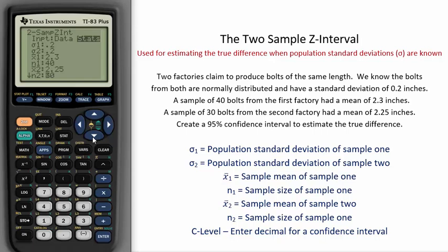We need to create a 95% confidence interval to estimate the true difference. To do this, we will put in 0.95 for our C-level and then calculate our interval. Our interval will be calculated by taking sample mean 1 minus sample mean 2.